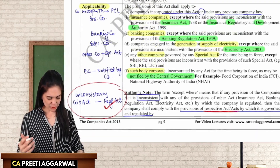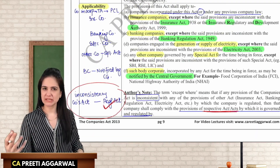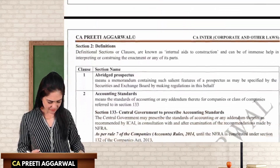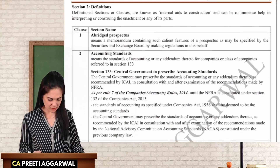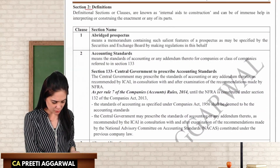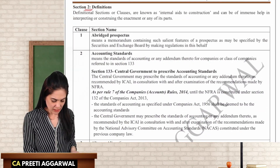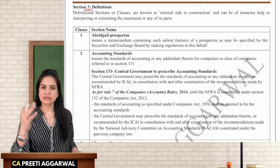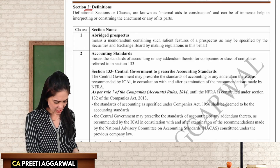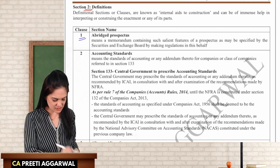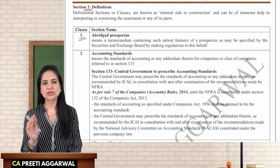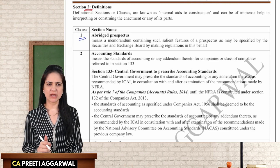What is a body corporate? We will discuss that in Section 2 Clause 11. The definitions are given under Section 2. The first clause, Clause 1, defines abridged prospectus.